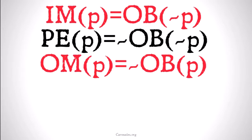Omissible that P, we're going to define as it's not the case that it's obligatory that P. Basically, if something is omissible, you don't have to do it, that means it's not the case that you have to do it, that you're obliged to do it.